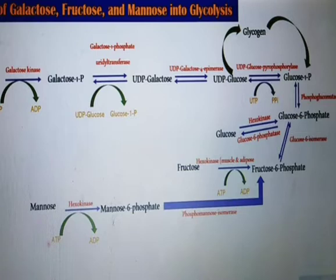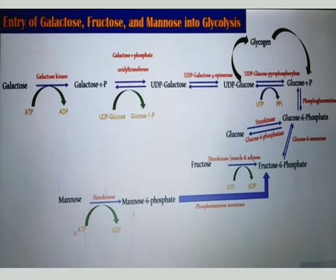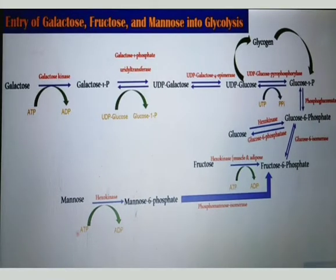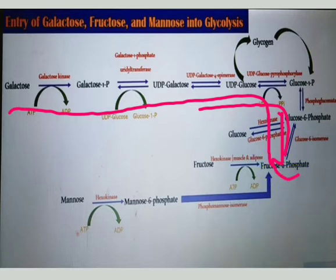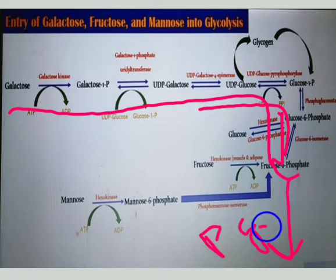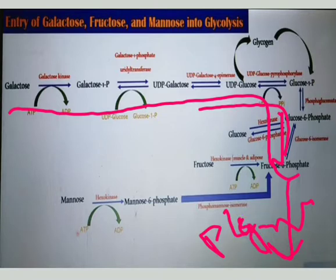When there is a short question in your examination to write down the catabolism of galactose to pyruvate, you can write down all the steps starting from galactose to galactose-6-phosphate. Then from fructose-6-phosphate, you write the whole glycolytic pathway up to the pyruvate.